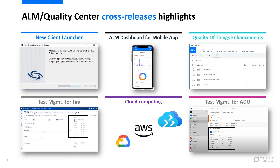We also introduced cross-release features. The ALM Client Launcher is a Windows application to run the ALM Desktop Client without dependency on Internet Explorer or ActiveX technology. Starting from version 4.0, it can be deployed via Windows Installer, making it easy for IT organizations to distribute it to all end-user environments. The ALM dashboard for mobile application enables you to view dashboards from your mobile devices without downloading the ALM Client.